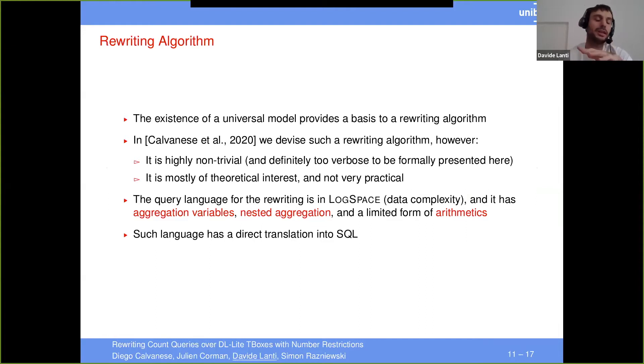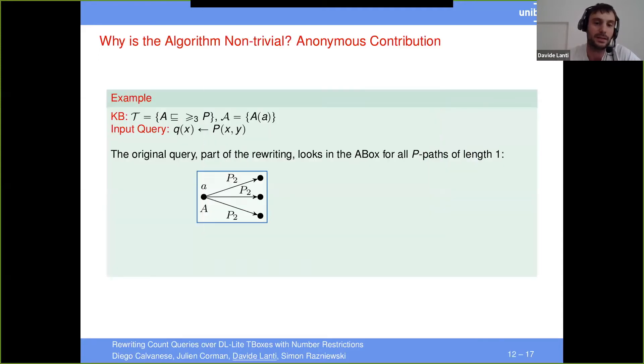Now, the thing is that this algorithm is highly non-trivial, it's very complex, and it's also not practical. I will show you both of the things, why they are the case. So the first thing is why this is non-trivial. So imagine you have this knowledge base where I have an individual A which belongs to class A, and this must have three P successors. And this is my input query here. The certain answer should be three, because I have exactly three P successors in the cautious chase.